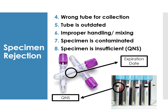Other reasons for specimen rejection include: wrong tube used for collection, outdated tube, improper handling or mixing, contaminated specimen, and QNS — quantity not sufficient. Always check the expiration date of the tube. Both underfilled and overfilled tubes are grounds for rejection.